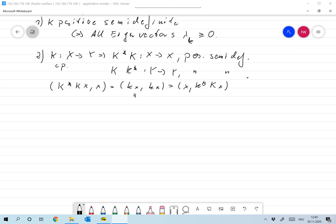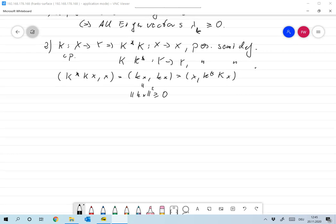And this is nothing but the norm of Kx squared, and this is larger or equal to 0. So this is also positive semi-definite, and the same for the other amount.